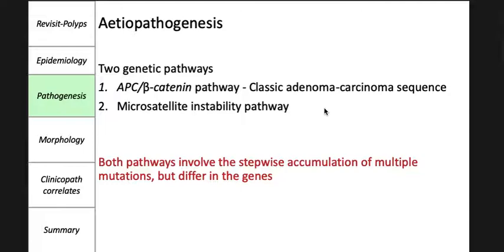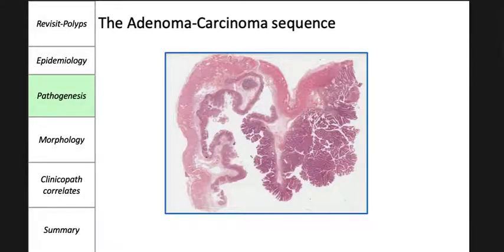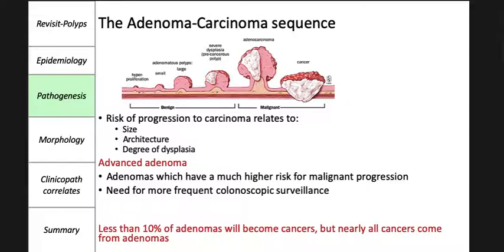The combination of molecular events that lead to colonic adenocarcinoma is heterogeneous and includes at least two genetic pathways: the APC/beta-catenin pathway, also called the classic adenoma-carcinoma sequence, and the microsatellite instability pathway. Both pathways involve stepwise accumulation of multiple mutations but involve different genes. In the APC/beta-catenin pathway the APC gene is mutated, whereas in the microsatellite instability pathway there are defects in DNA mismatch repair.